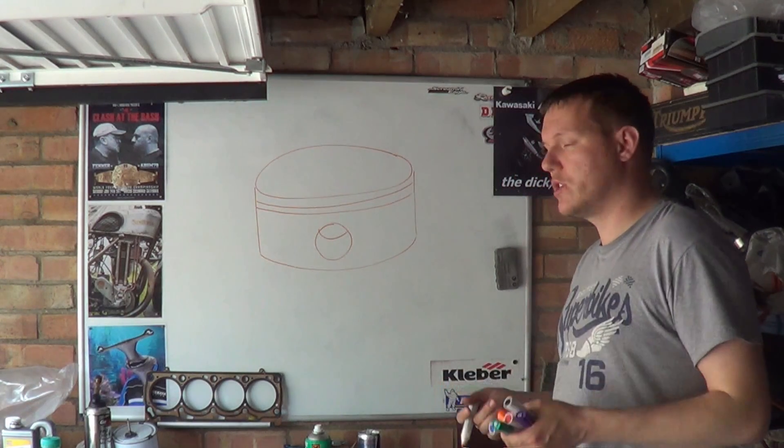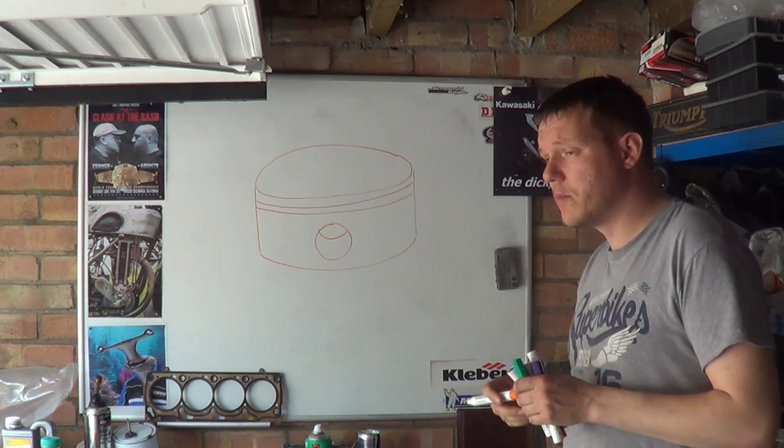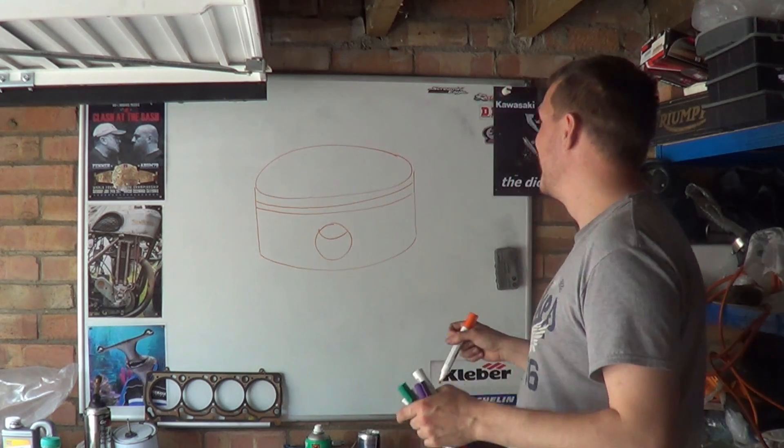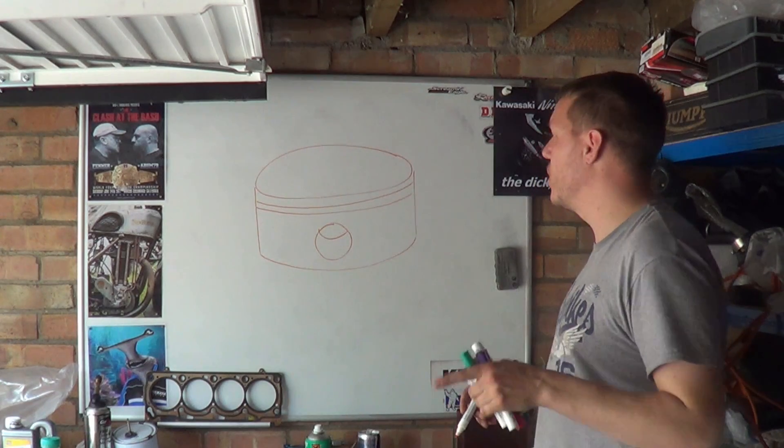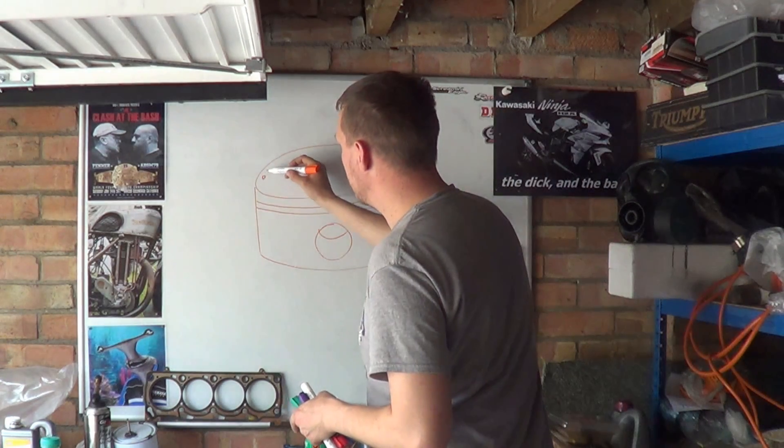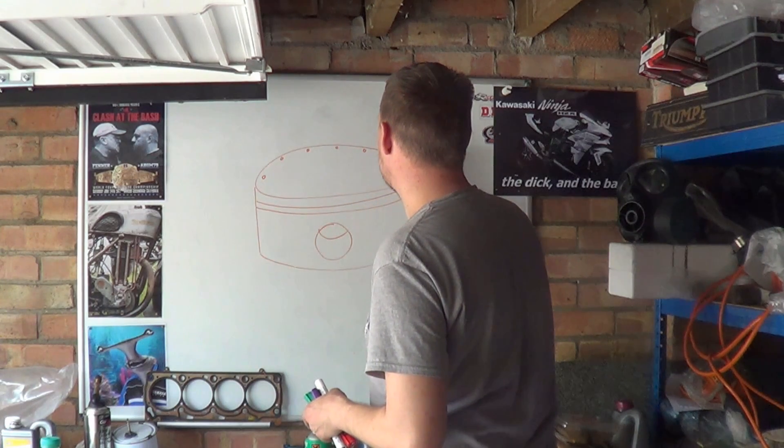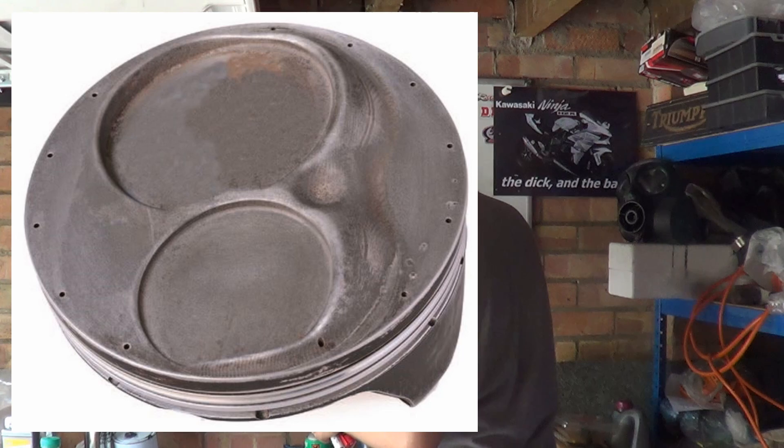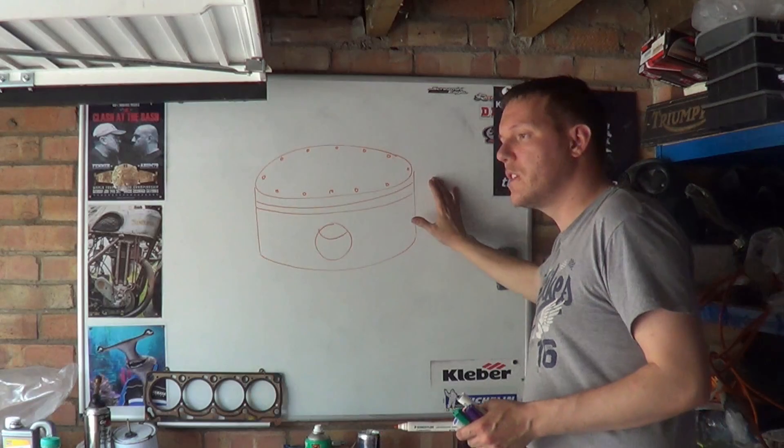So the question was, this guy asked me - maybe you won't know this, ha I do - he said there were holes in the top of a piston that he'd seen, and he says he can't remember where he'd seen it, but there were these little holes all the way around the top of the piston.